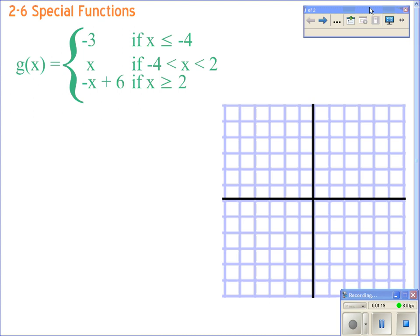There are multiple ways to graph these. I find it easiest if we do a table of values, because then you know exactly where your points are going and you're just going to be connecting them with lines. We're going to take each one separately.